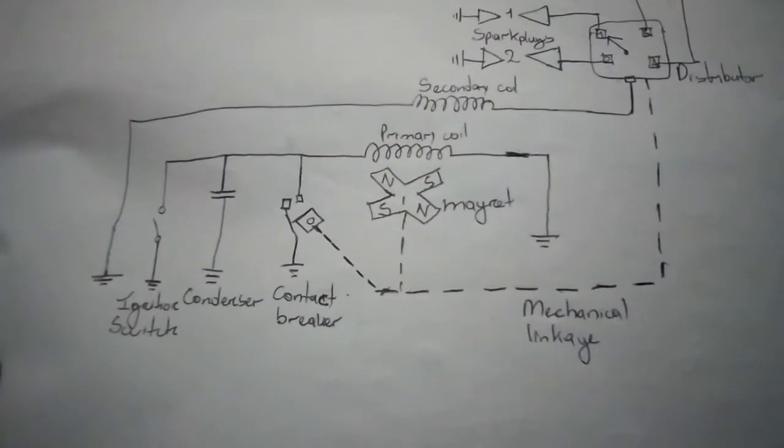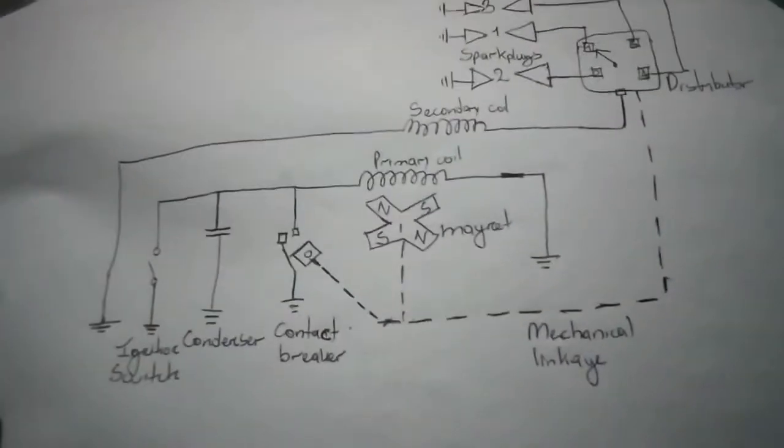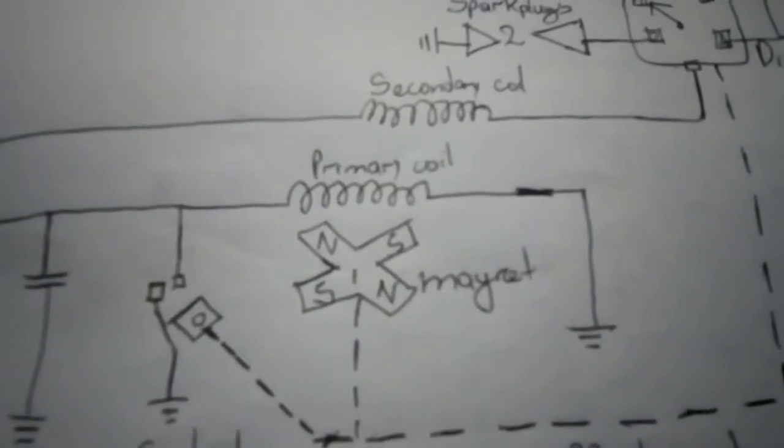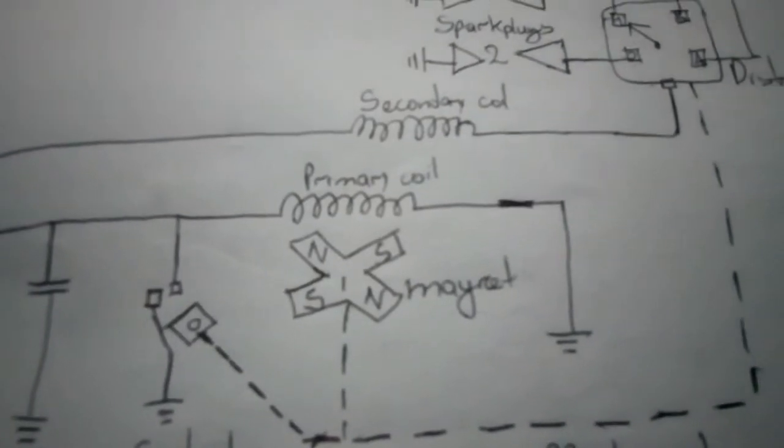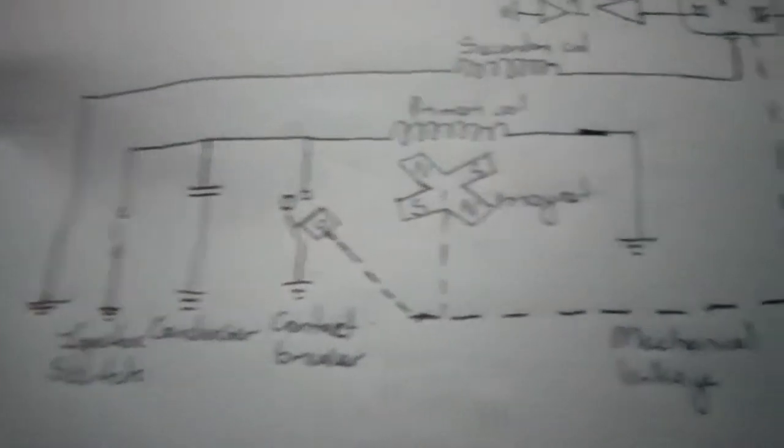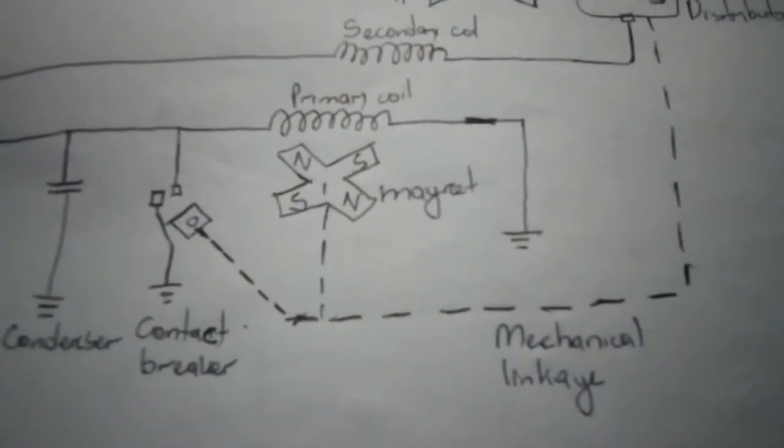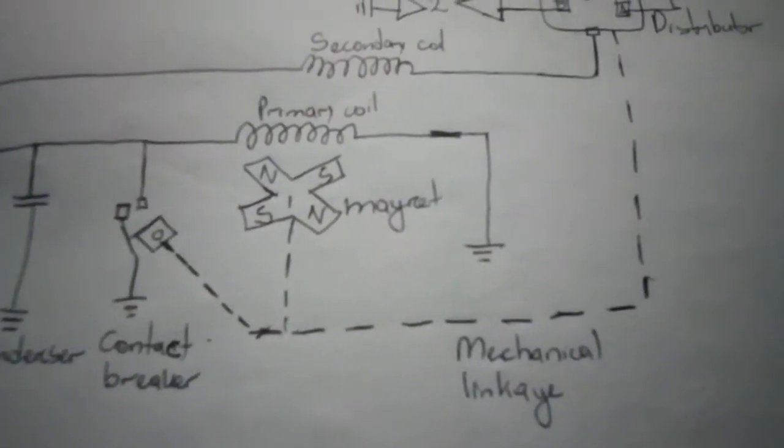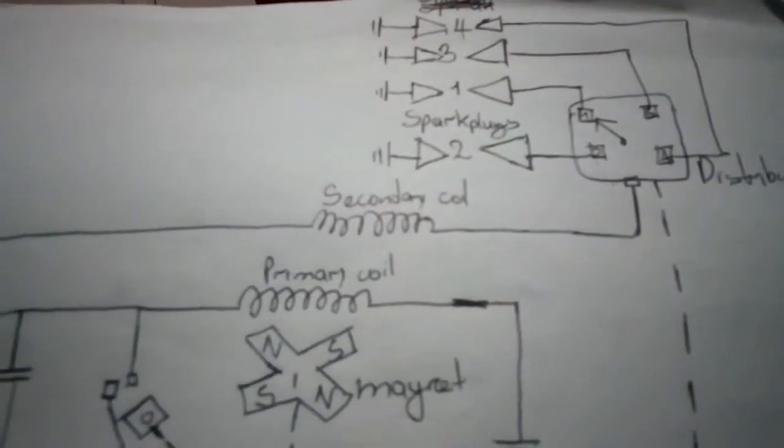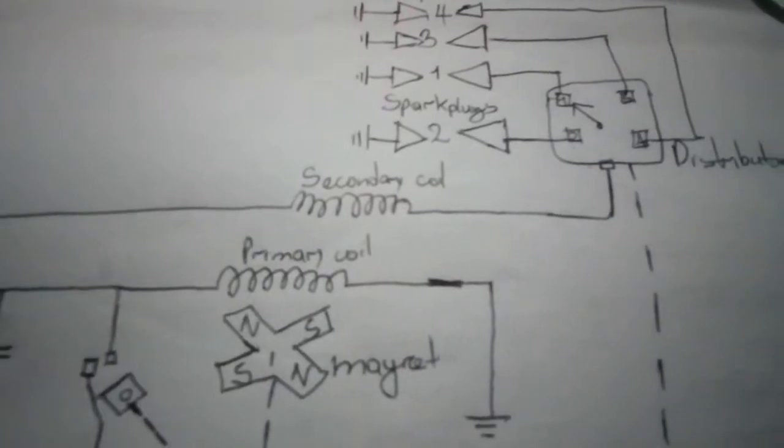So a magneto carries a permanent magnet and a primary coil, a secondary coil, contact breakers, condensers, an ignition switch, mechanical linkage to the crankshaft through gearing, a distributor, and the distributor sends a high voltage to spark plugs.